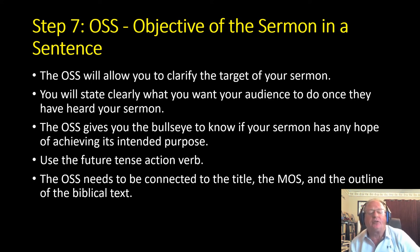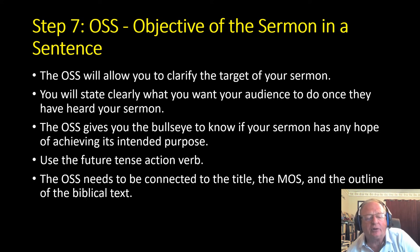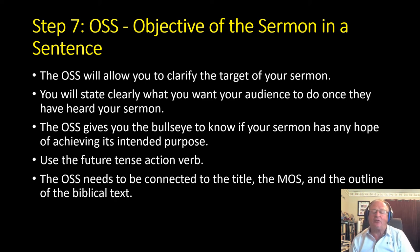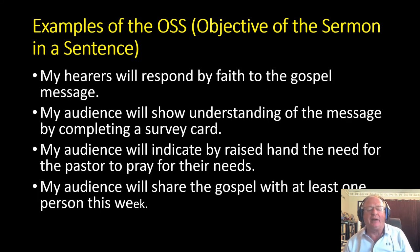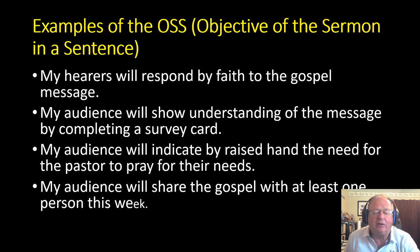Step 7 is the OSS — Objective of the Sermon in a Sentence. This allows you to clarify the target of your sermon. You're going to state clearly what you want your audience to do once they have heard your sermon. It gives you that bullseye to know if your sermon has any hope of achieving its intended purpose. You're going to usually use a future tense action verb. Examples: 'My hearers will respond by faith to the gospel.' 'My audience will show understanding of the message by completing a survey card.' 'We will indicate by raised hand the need for the pastor to pray for their needs.' 'We will share the gospel with one person this week.'